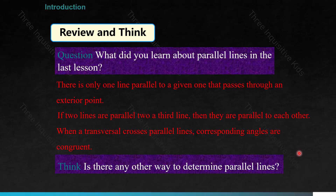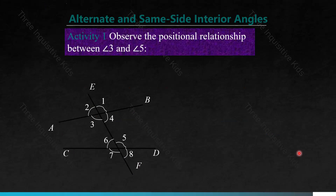But is there any other way to determine parallel lines? In the last video, we learned how to determine the parallelism between two lines using corresponding angles. In this lesson, we are going to look at two other ways to determine parallel lines: alternate and same-side interior angles.